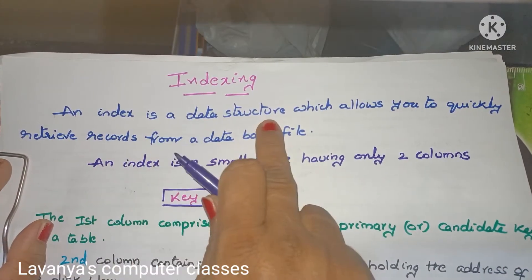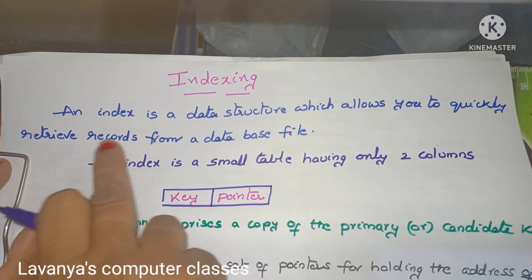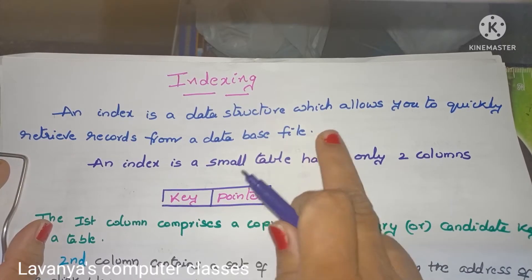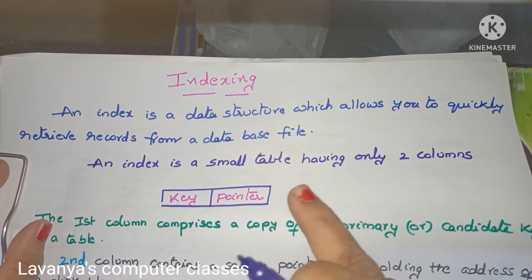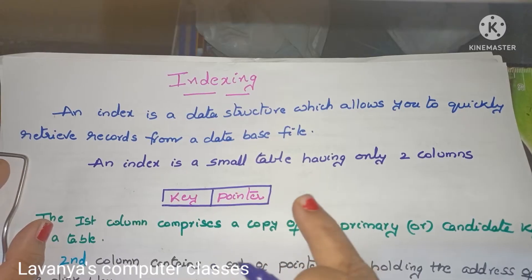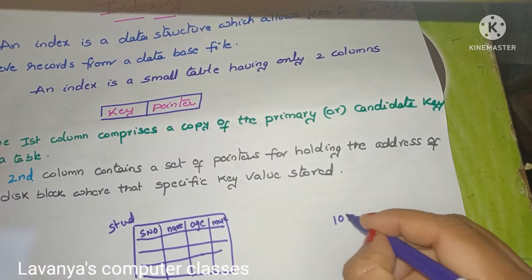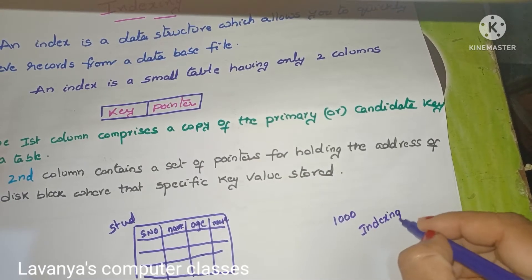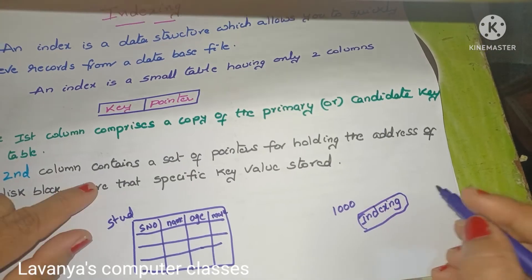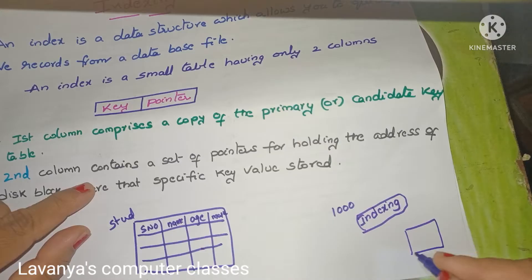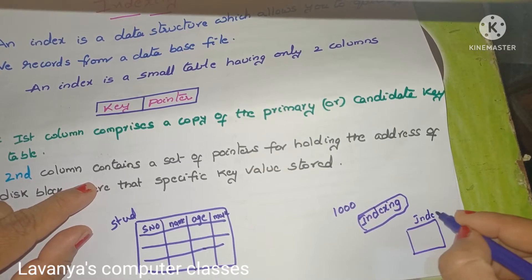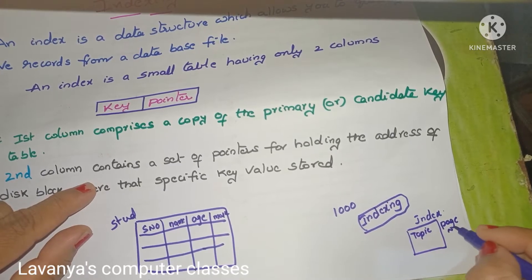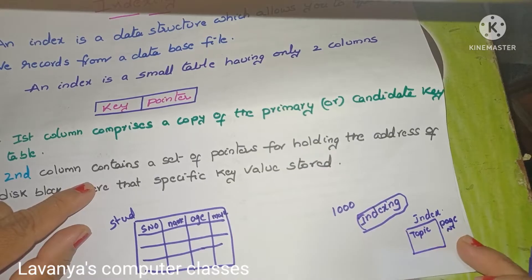Index is a data structure which allows you to quickly retrieve records from a database file. For example, in a textbook with a thousand pages, if we need a topic like indexing, we go to the index at the back of the textbook, where topics and page numbers are listed, so we can find which page has the particular topic.